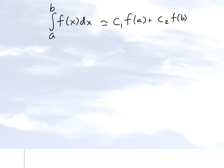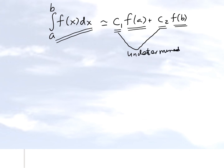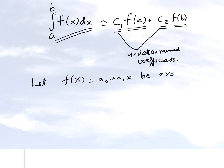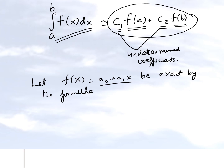Let's see whether we can derive the trapezoidal rule by assuming that the integral of a function is given by multiplying the function value at a by some c1 and the function value at b by some c2 — these are the undetermined coefficients. To find them, we say let f(x) = a0 + a1*x be exact by the formula, meaning whatever we get from the formula equals what we get from integral calculus for this function.